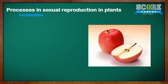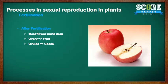Now let's look at what happens after fertilization. Most of the flower parts will drop off — like the petals, the anthers, everything will all drop off. The ovary, which remains, will develop into the fruits, and the ovules will develop into the seeds. So these seeds you see here were initially the ovules, and this whole fruit is the ovary.